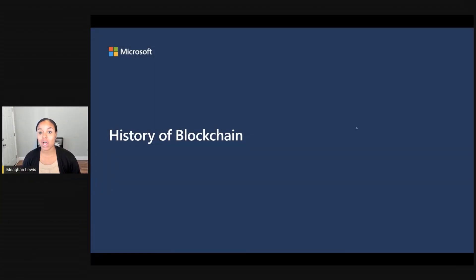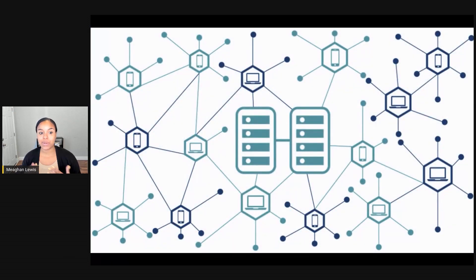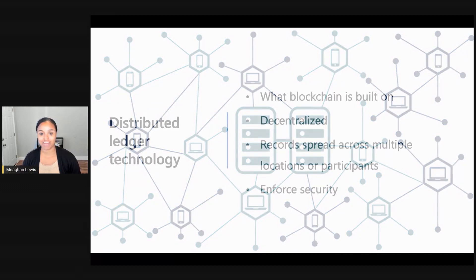Putting it simply, blockchain is literally a chain of blocks that securely stores data about transactions and events that happen within one blockchain network. You can think of it as a database or a collection of data that is decentralized, meaning everyone stores a copy and can read to and write from it.